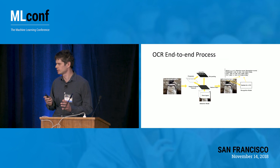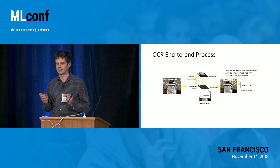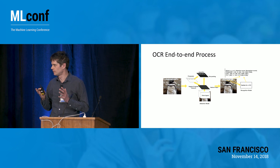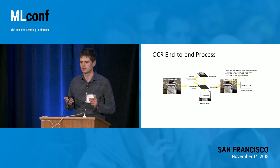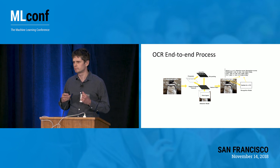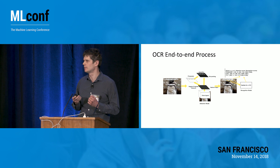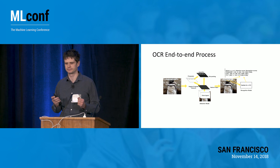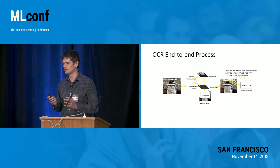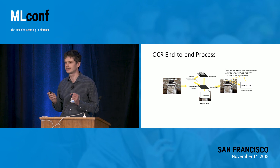How does the OCR process work? You have an image, and on the first step you do text detection, where we use a Faster R-CNN network to detect bounding boxes around each word. Then, once you detect the bounding box, we use another convolutional neural network to extract the characters of each word.